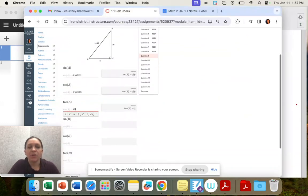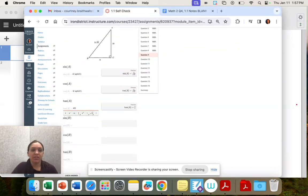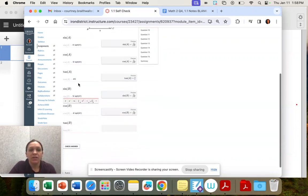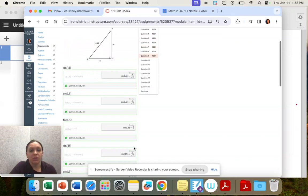So remember what happens when we switch our reference angle to B. The opposite and adjacent switch sides. And so do the sine and cosine. So sine of A is equal to cosine of B. Cosine of A is equal to sine of B. And then for the tangent, it's the reciprocal. So instead of four fifths, it's going to be five fourths when those values switch spots.